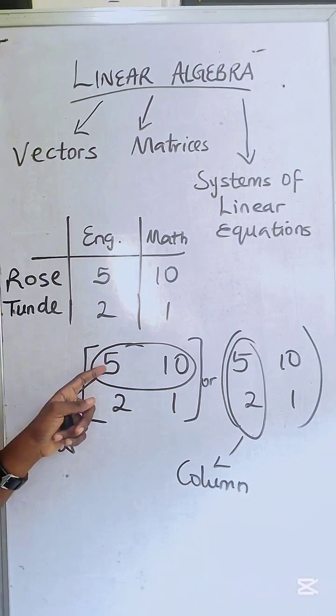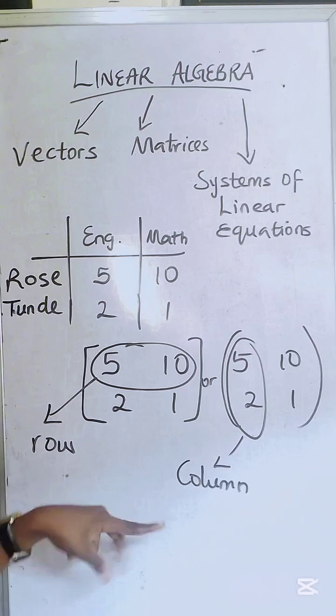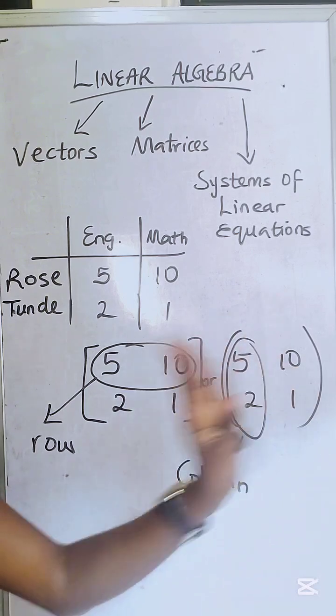Please take notes. So you have your row and you have your column. This way, those are the rows and this way, those are the columns.